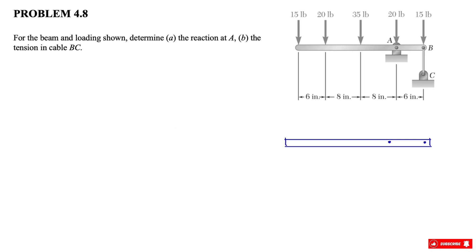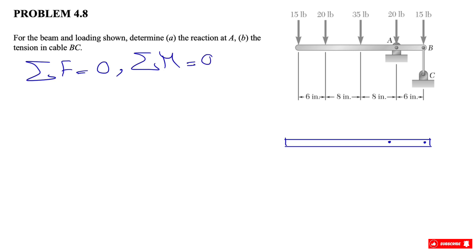Hey guys, welcome back to the channel. In this question we need to determine the reaction at A, and in part B we need to find the tension in the cable. We're going to start as always with the free body diagram, and since we are in equilibrium we have our equilibrium equations: sum of all forces in the x and y direction equals zero, and sum of moments about any point equals zero. Let's show all the forces on the free body diagram first.